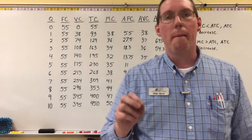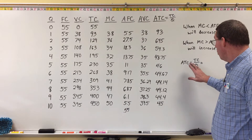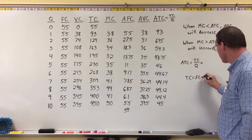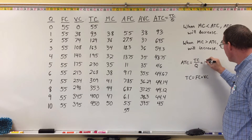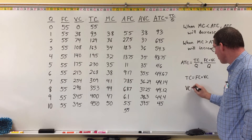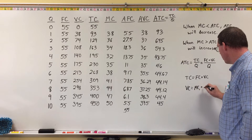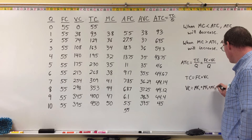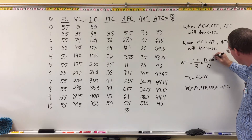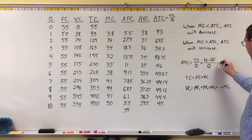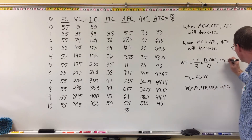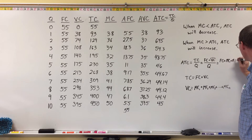Mathematically, average total cost equals total cost divided by quantity. Total cost equals fixed costs plus variable costs, so ATC equals fixed costs plus variable costs divided by quantity. Variable cost equals the sum of marginal costs — MC of the first unit plus MC of the second plus MC of the third, all the way up to the nth unit.